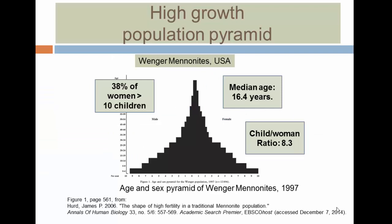Another example is a subgroup in the United States: the Wenger Mennonites, who live in about 16 communities from Pennsylvania to Wisconsin. Their population pyramid is also very wide at the bottom and narrow at the top. Mortality is low and longevity is long, but because the population is growing so rapidly, the ratio is 8.3 children per woman. Thirty-eight percent of women in the community have given birth to 10 or more children, and the median age is just 16.4 years.